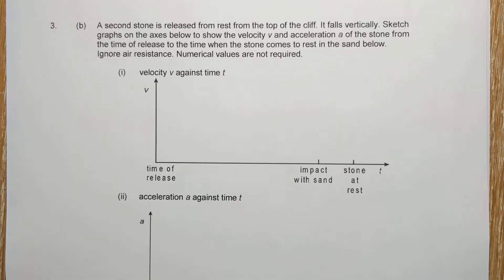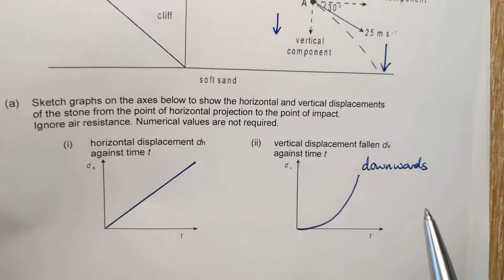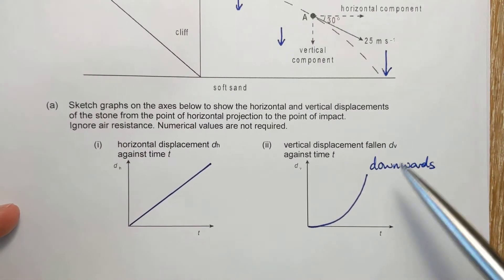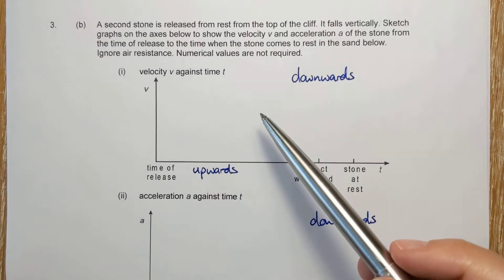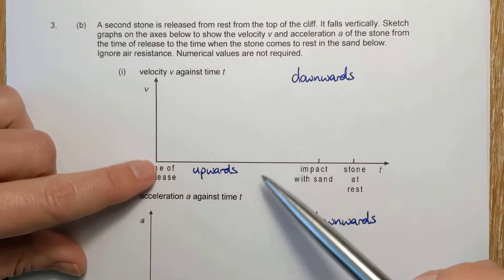And here we go. So remember that in this question, downwards has been chosen as the positive direction. So here again, positive is downwards, negative is upwards.